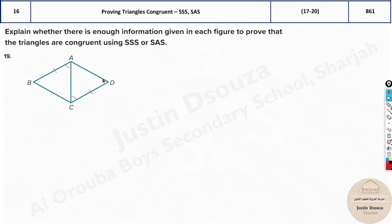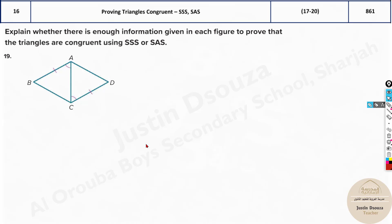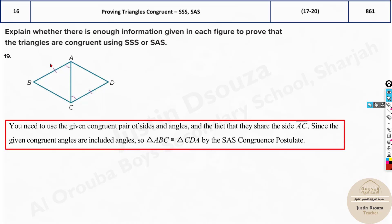Now what about this one? When I look at it, I can see this is SAS. Why? Because there is this side, then the angle, and AC is a common shared side — SAS postulate. From the given congruent side and the congruent pair of angles, and the fact that AC is the same side shared by both triangles, we can say it satisfies the SAS congruency postulate.